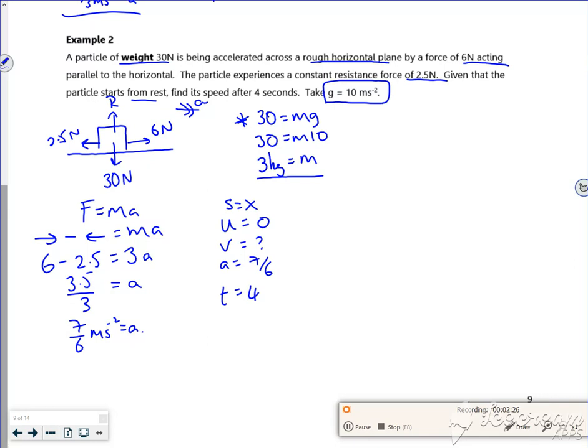Speed is what I want. Acceleration is 7 over 6, t is 4 seconds. Right, so which equation doesn't have s in it? That's just v equals u plus at, the easiest one to remember. So v is 0 plus 7 over 6 times 4, so that's going to be 14 over 3 meters per second.